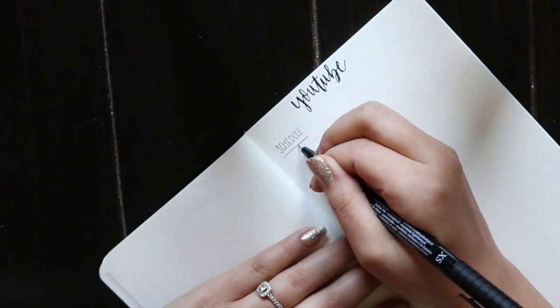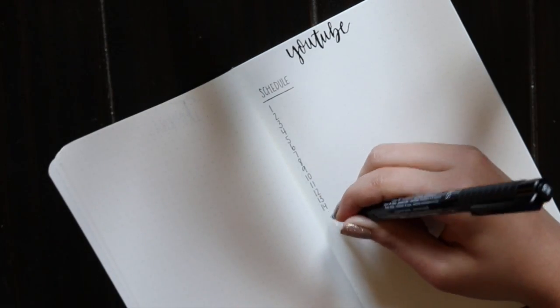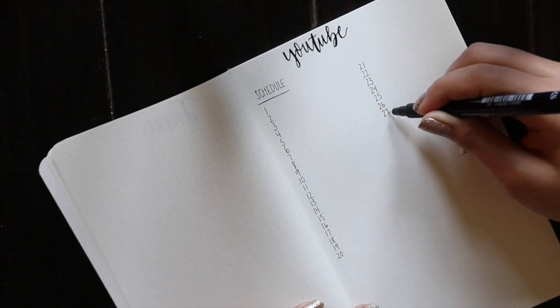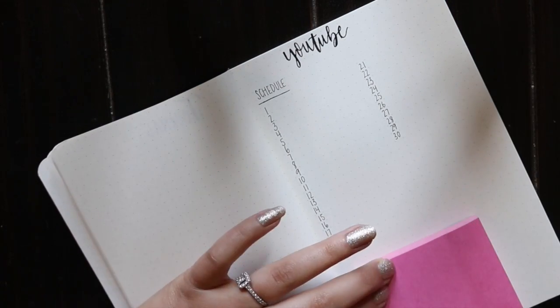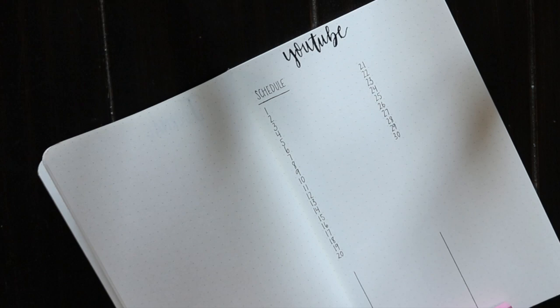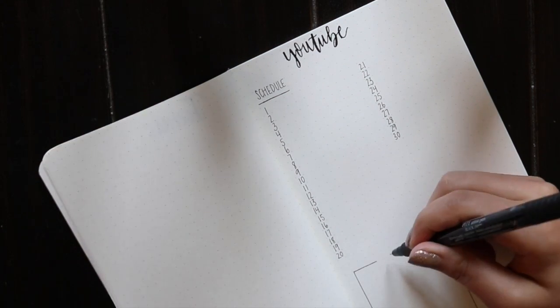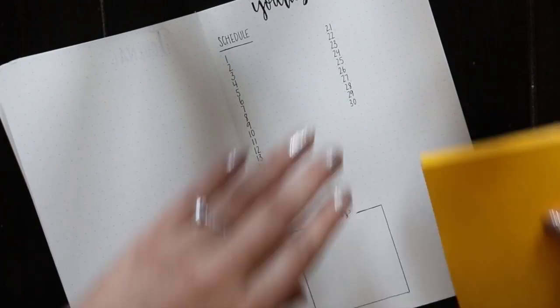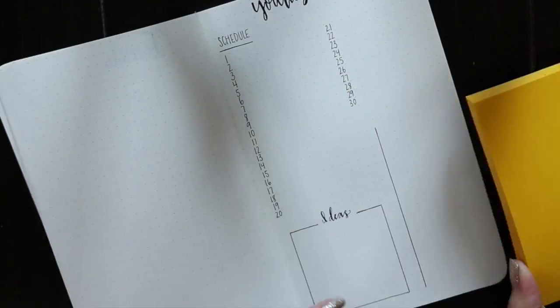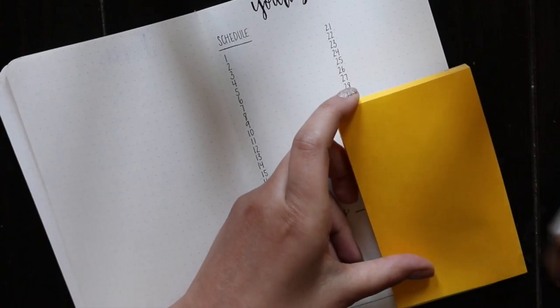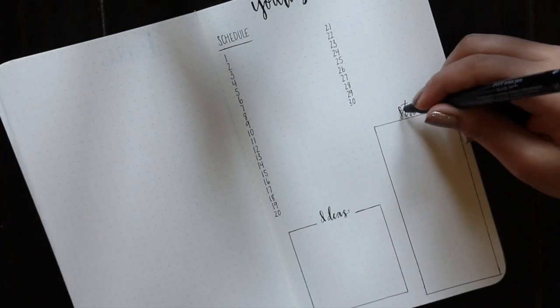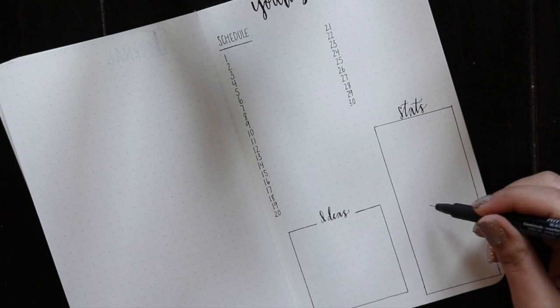Moving on to my YouTube page, this is where I track my schedule, ideas, and stats. I will fill in the videos that I post next to the number date and highlight it so it stands out, because I obviously don't post videos every single day but I'm not sure what days I'm actually going to post. I made a block just for my ideas so I can brainstorm in there. I also am putting together a box for stats where I will track my subscribers and also my top videos so that it gives me an idea for what videos I will plan in the future.